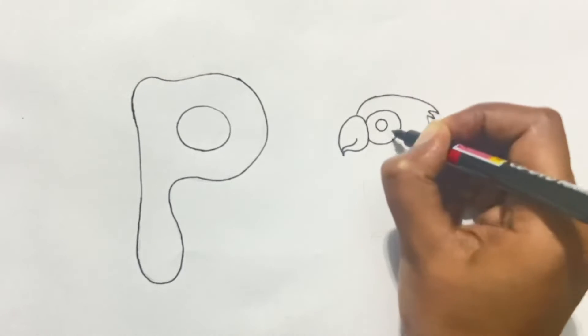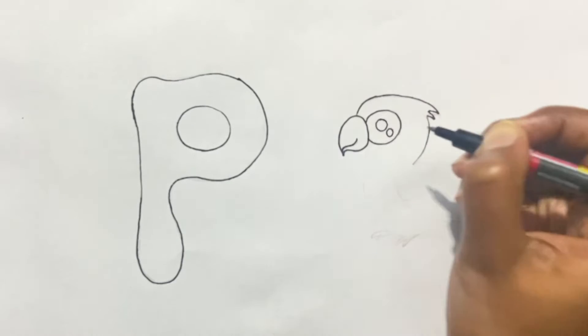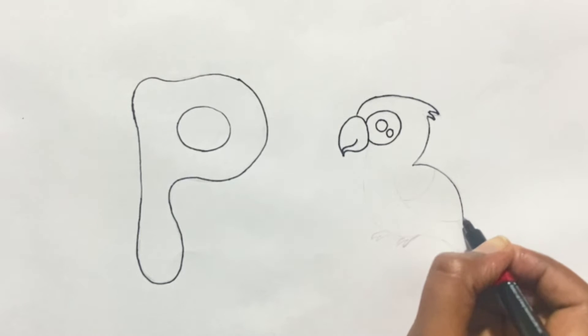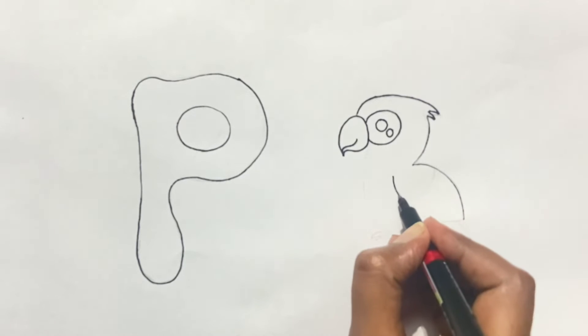Now we will make the wings in this shape. This is a shape of a leaf.